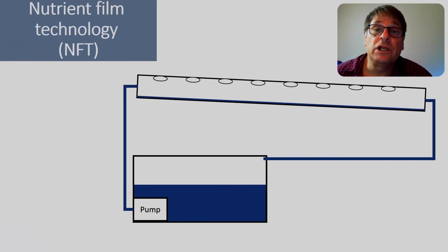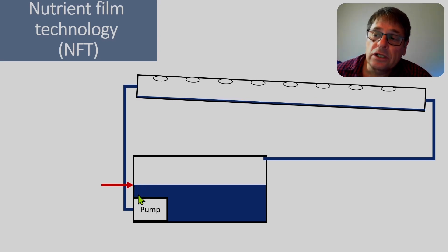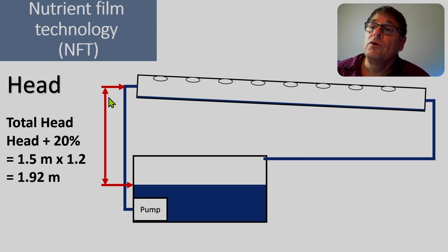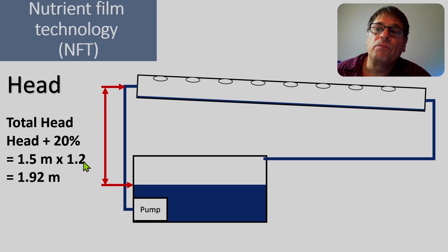Now we need to consider how high we must lift the water in the system. Remember, it's from the lowest point the water can reach up until the highest point where the pump must take the water. If you think your point is a little bit lower, move your measurement from there up to the highest point that the water must be lifted — not the highest point in your system, but the highest point where the water must be lifted to. This gives us our head. In this example, we measured from there to there and found it's 1.5 meters. In order to compensate for the friction in the pipes, we add another 20%, so 1.5 multiplied by 1.2 gives us 1.92 meters. That's the head we'll use to select the pump.